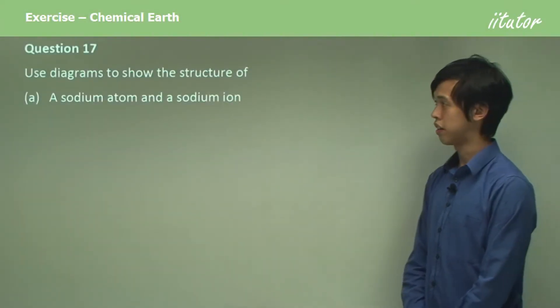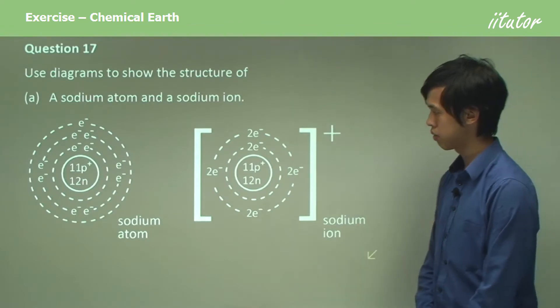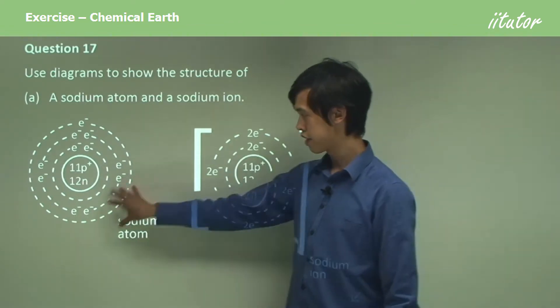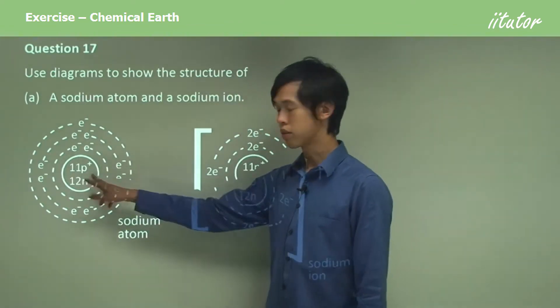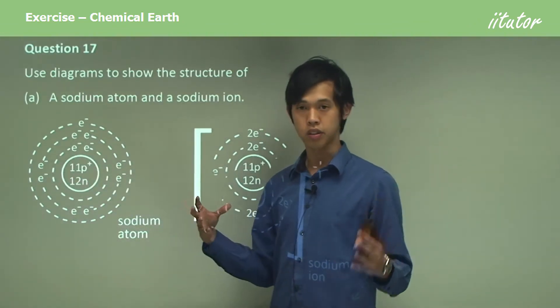Use diagrams to show the structure of a sodium atom and a sodium ion. So here we have it. If you look inside a sodium atom, you'll find 11 protons and 12 neutrons in the nucleus. But what we're really interested in is the electrons.